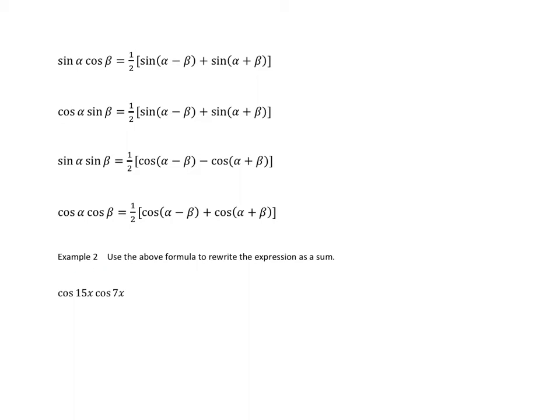Example 2 says, use the above formula to rewrite the expression here as a sum. So if you come across something like this, you have to identify which of these formulas is going to be helpful. I see I have a cosine times a cosine, and therefore I must use this thing here. I'm just going to note that alpha is equal to 15x and beta is equal to 7x. And the rest is simply plugging values into this identity.